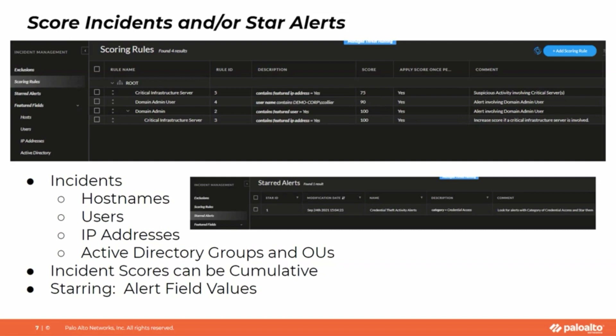Starring is going to be based on alert field values. When you set up the starring rule, it's going to present you with alerts that you have seen in XDR, and you can come in and basically set up a filter. In the particular demo that we do here, we have said that any alert where the category of the alert involved credential access or credential theft — we wanted to star those incidents in particular because it could mean that somebody now has credentialed access into the environment, and that would be a concern.